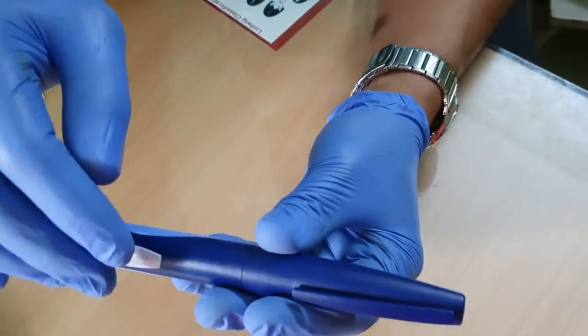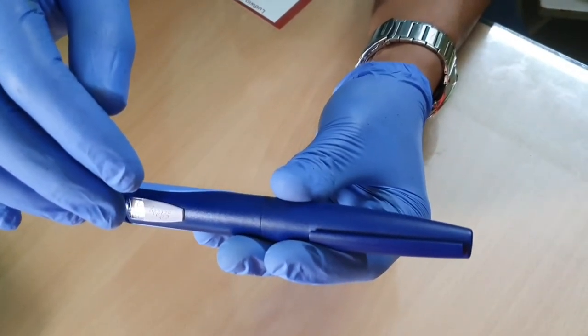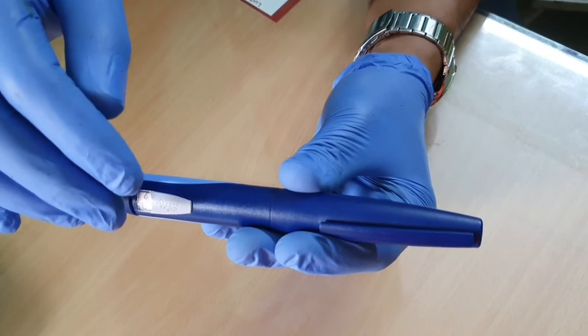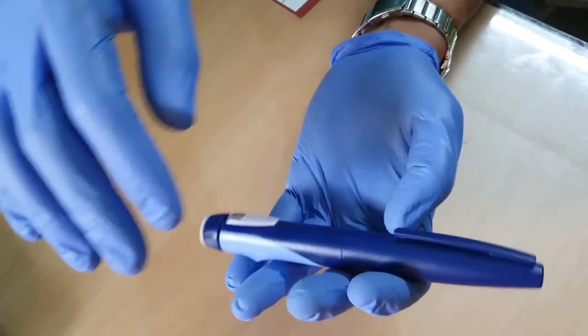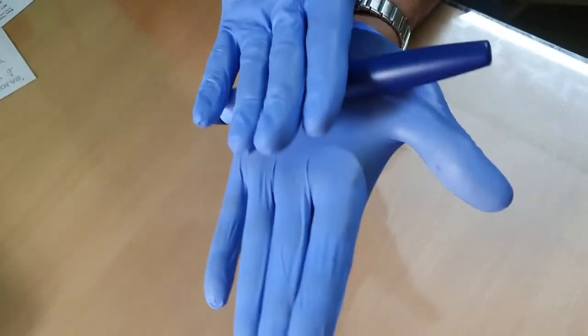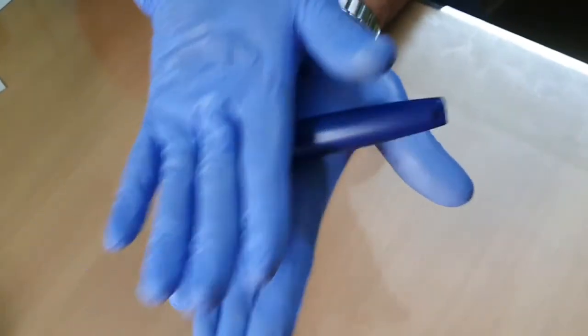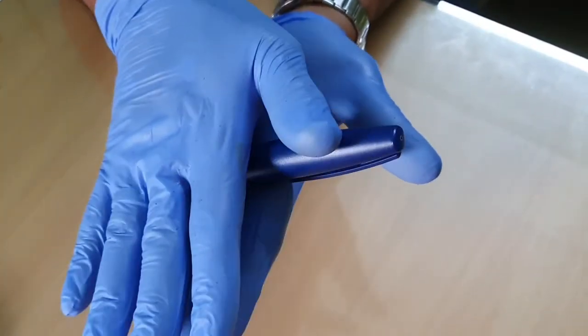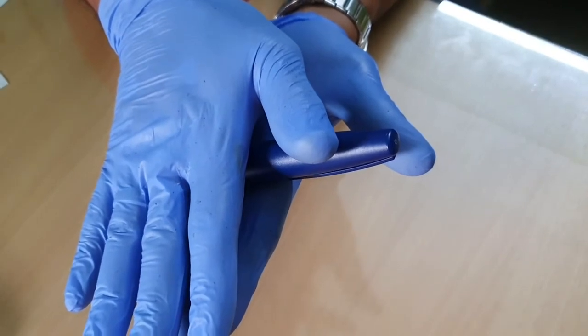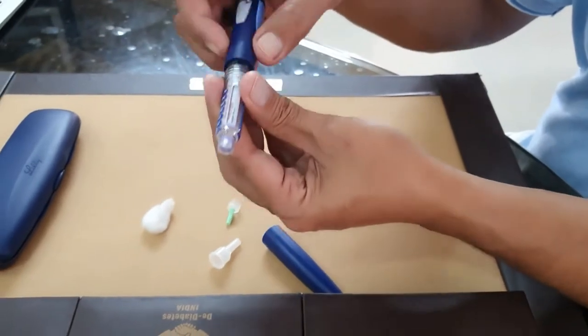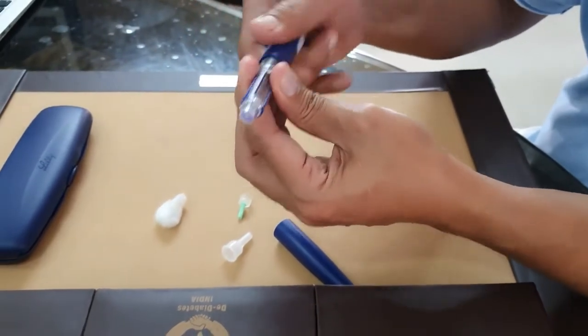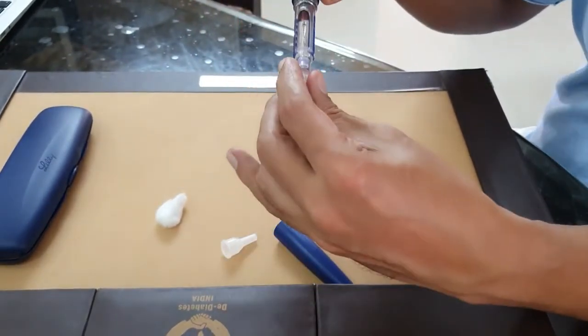As I've told in the main insulin video, every time before taking insulin injection, you should always rotate the insulin pen in between your palm for about 10 times. Never forget to do that.